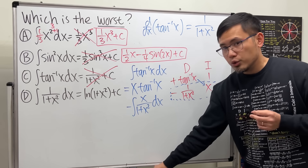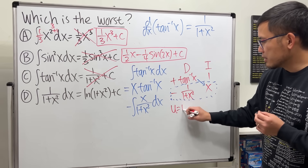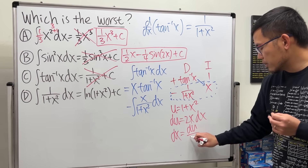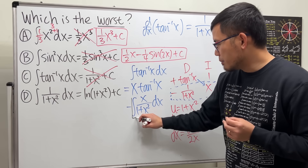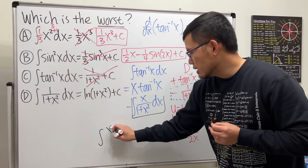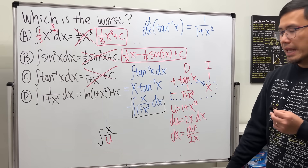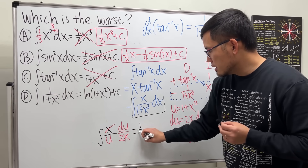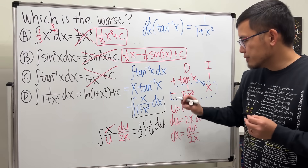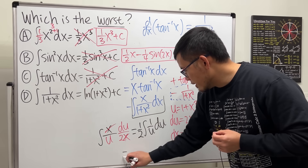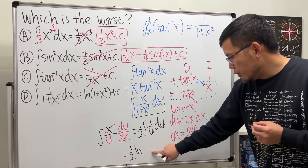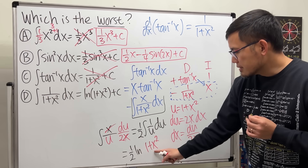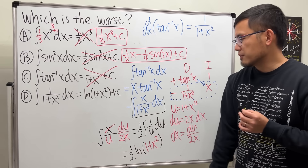To integrate x/(1 + x²), use u-substitution: let u = 1 + x². Then du = 2x dx, so dx = du/(2x). Substituting: the x's cancel, pull the one half to the front, and we have one half ∫(1/u) du. The integral of 1/u is natural log, giving one half ln|1 + x²|. Since 1 + x² is always positive, we can use regular parentheses instead of absolute value.